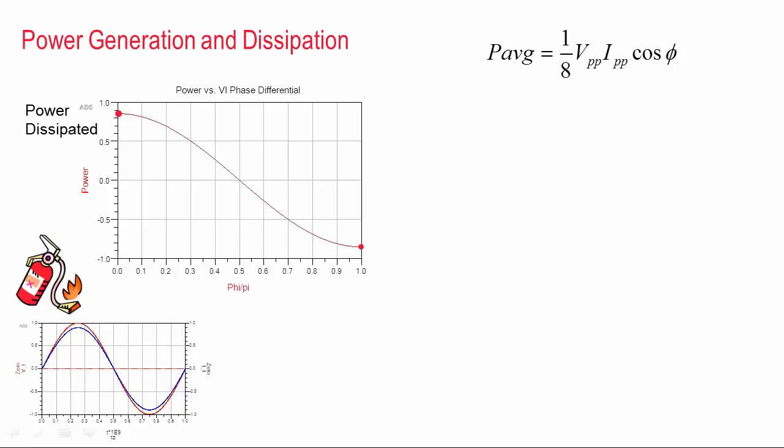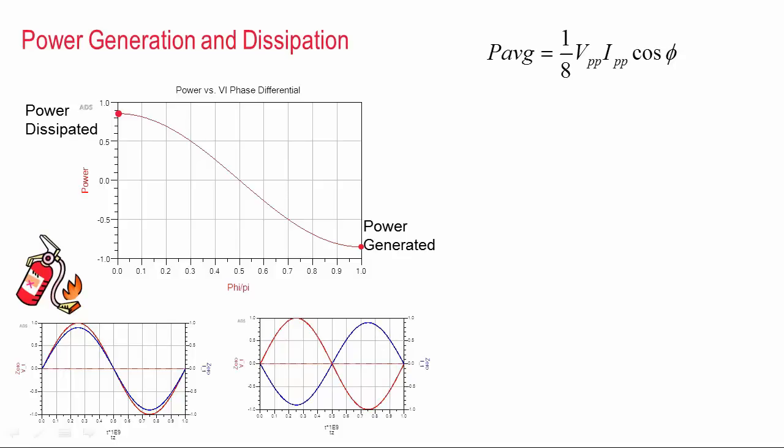Now on the other side of the graph, we have the case where the voltage and current waveforms are out of phase. In this case, we say that the device is generating power. And in the middle of the plot, power is neither dissipated nor generated. Instead, it's being stored.